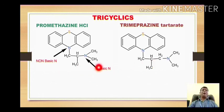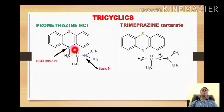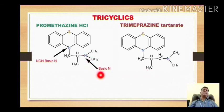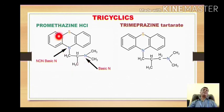In both compounds, the nitrogen which is part of the heterocycle is considered non-basic nitrogen. We know that aromatic nitrogens are non-basic in nature. In this case, this nitrogen is non-basic because it has shared its pair of electrons to produce the aromatic character in the phenothiazine ring. That means the basicity of promethazine and trimeprazine is solely from the side-chain nitrogen. That is why promethazine reacts with hydrochloric acid to form promethazine hydrochloride salt.